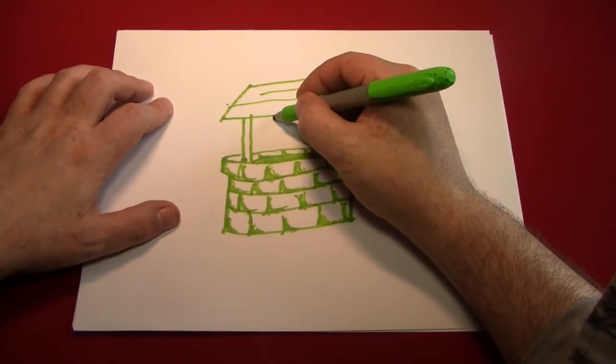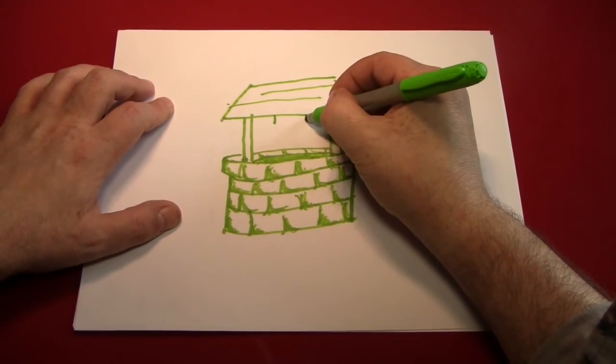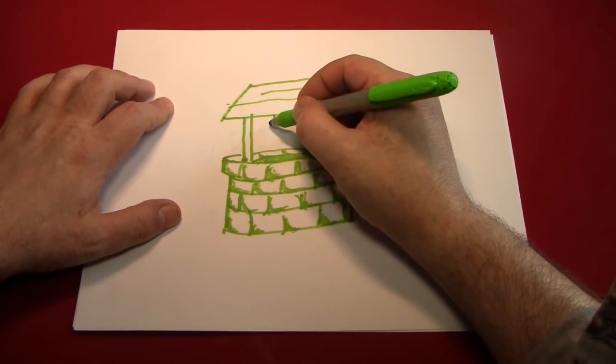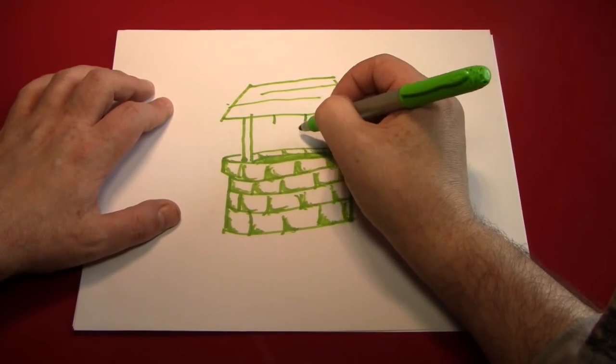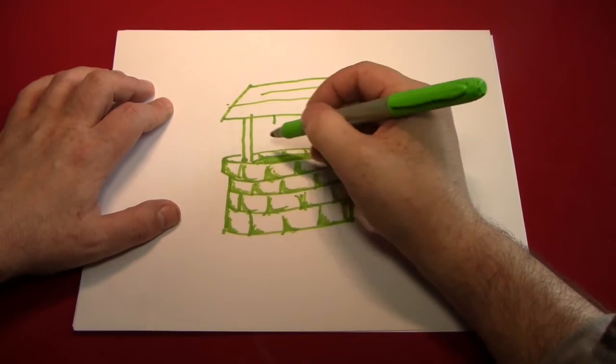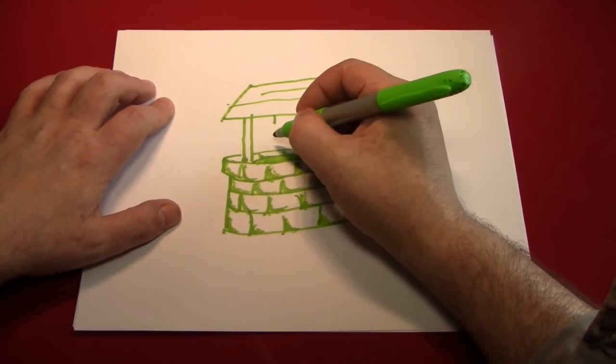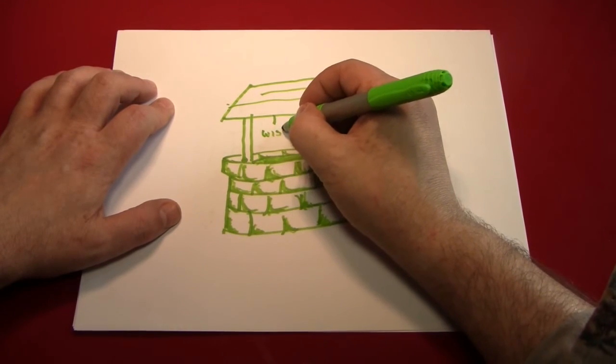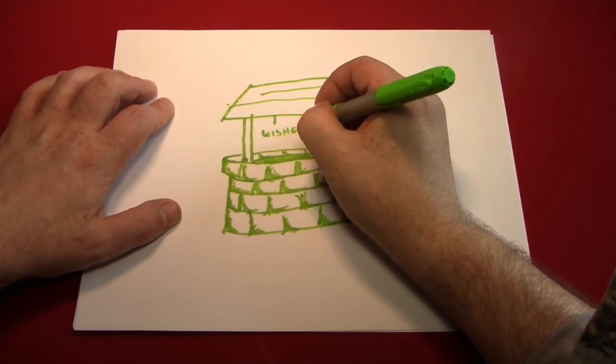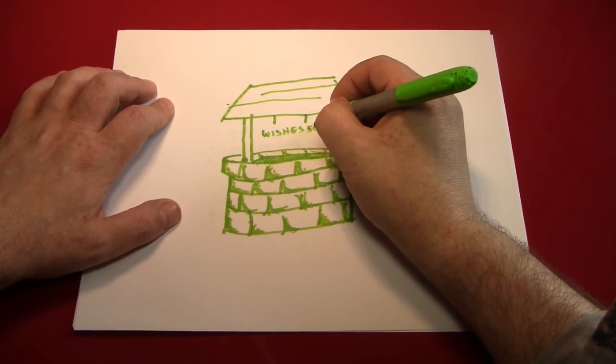And a little sign. You're going to need a little sign right here that comes down on two little ropes. And let's write what says on the sign, and then we'll figure out how big the sign has to be. So, we'll write wishes, five cents.